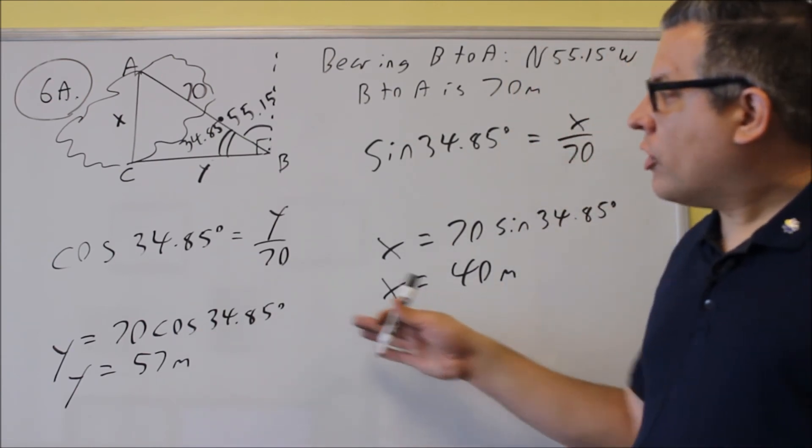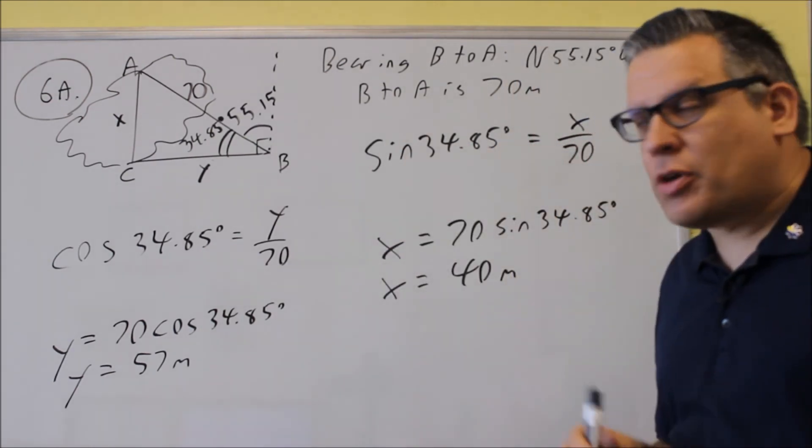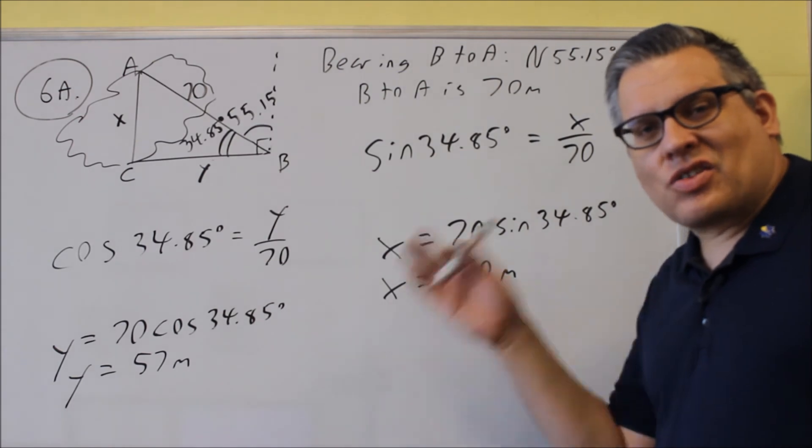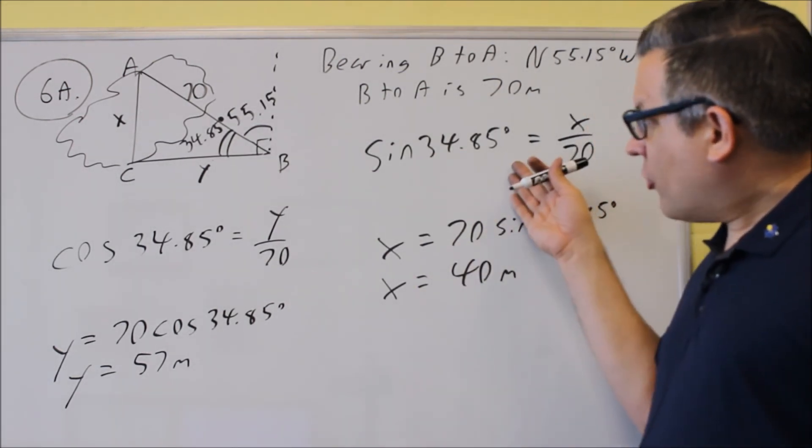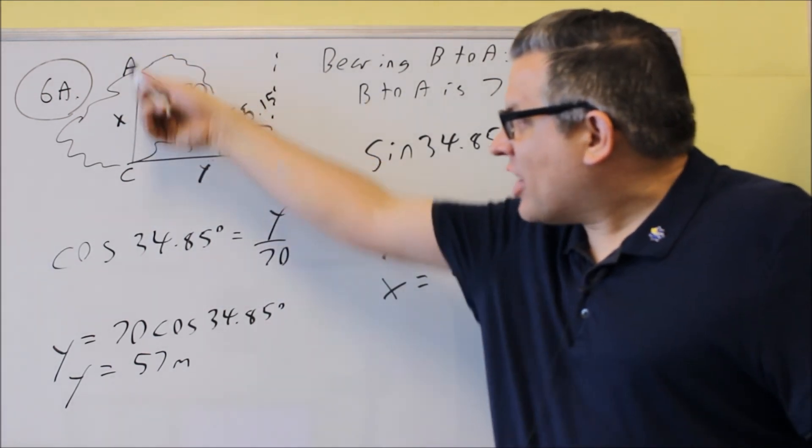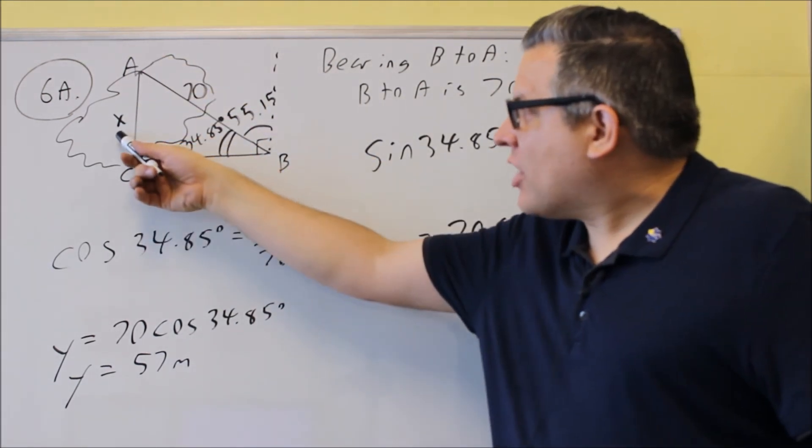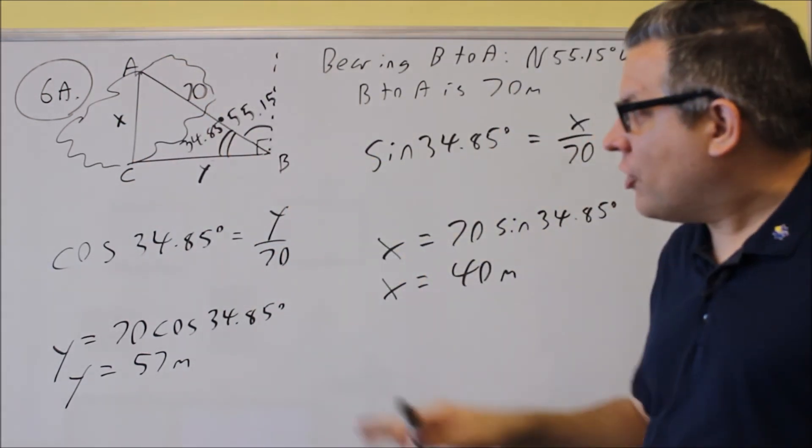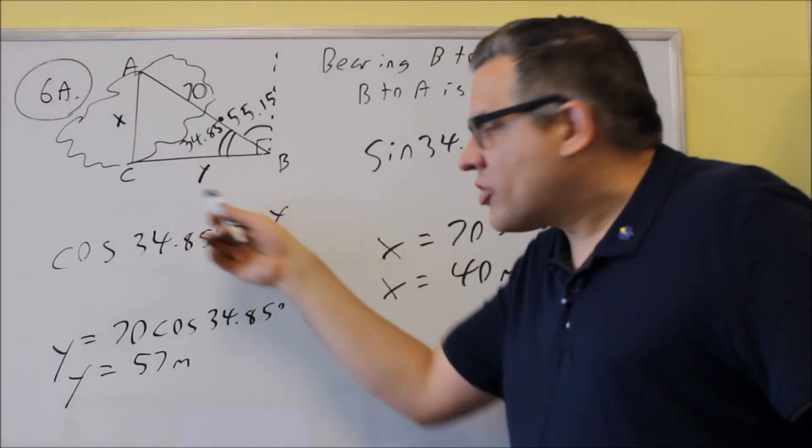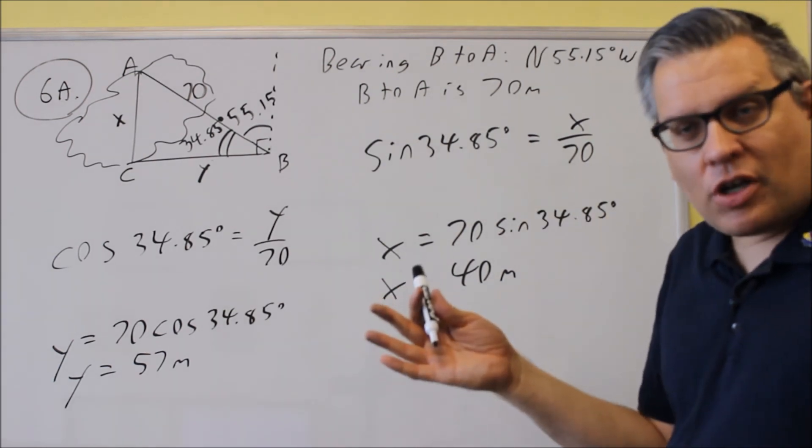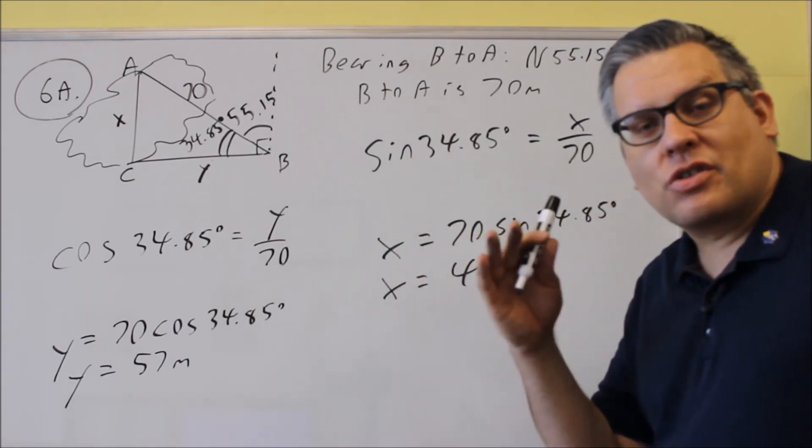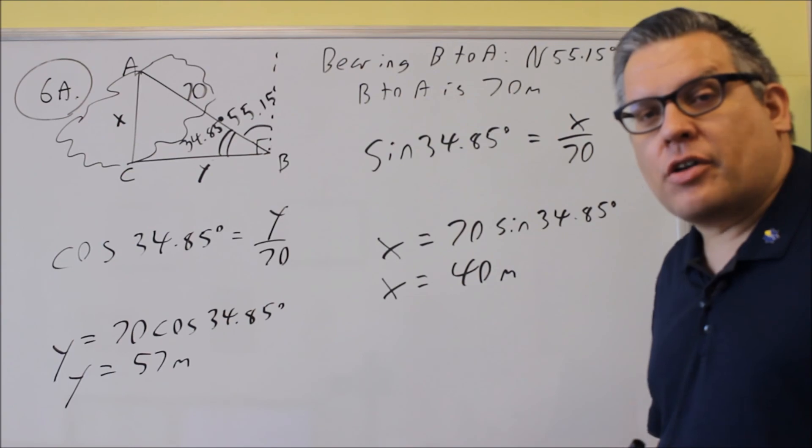So you're always looking for how you know what trig function to use. You want to pick the trig function that relates the side you're trying to find with the side that's given. So for the first one, we want to solve for side AC. That's an opposite side and hypotenuse with 70. For the other one, we want to solve for CB. That would be an adjacent side and we have an hypotenuse. So we pick cosine because that's the trig definition that relates the adjacent and the hypotenuse.